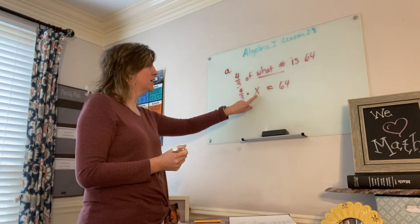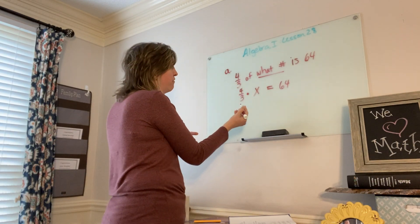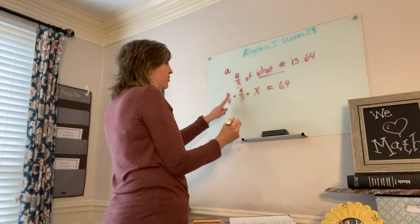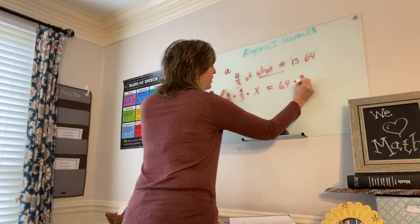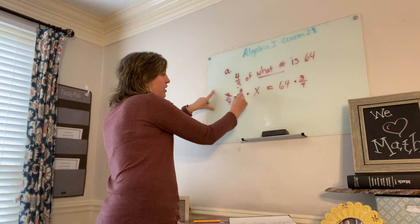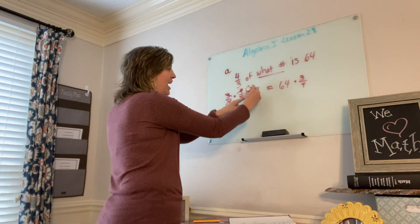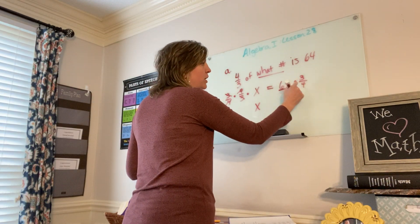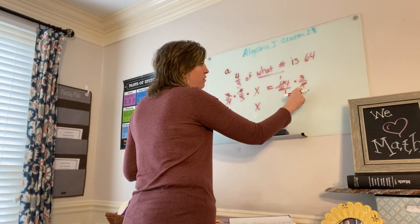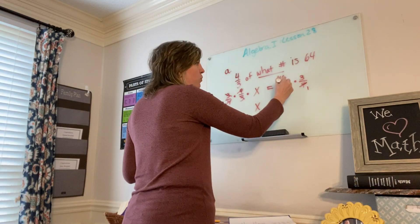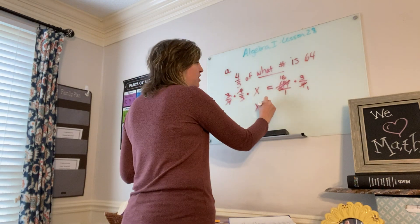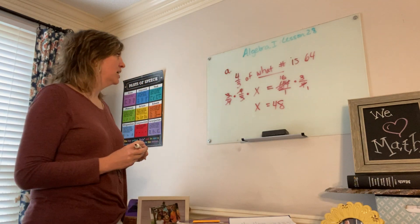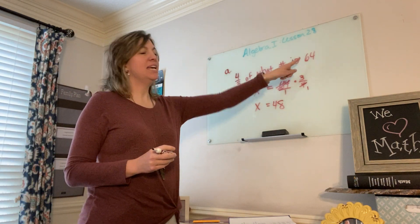My goal in algebra is to get my variable by itself. If it's being multiplied by four-thirds, I can divide by four-thirds. Division of fractions is simply multiplication by its inverse. Remember that algebra is always fair — what it does to one side, it always has to do to the other. The threes cancel out, fours cancel out, and everything cancels leaving me with X. So with 64 over 1, I cross-reduce: 4 goes into 64 sixteen times, and 16 times 3 equals 48. X equals 48.